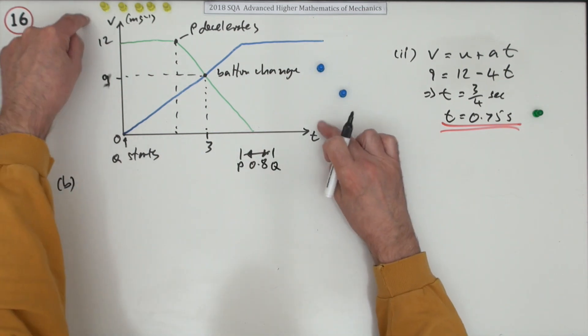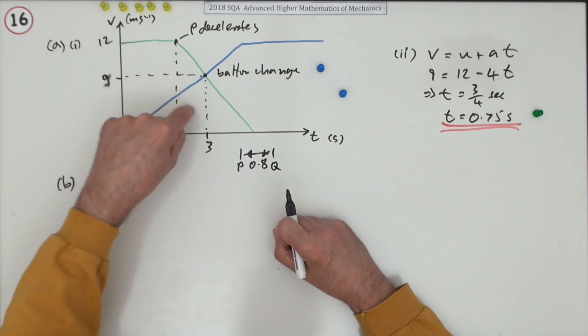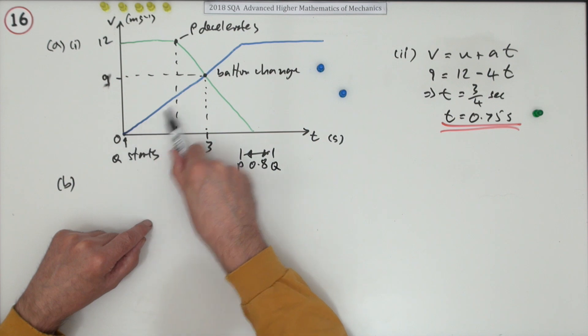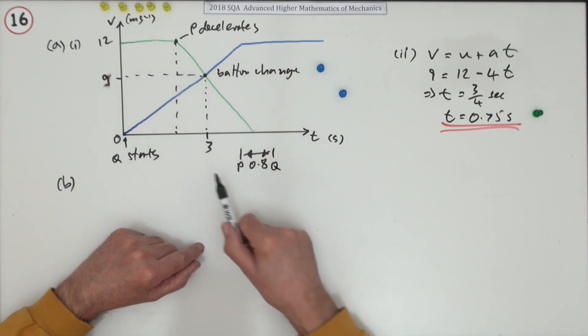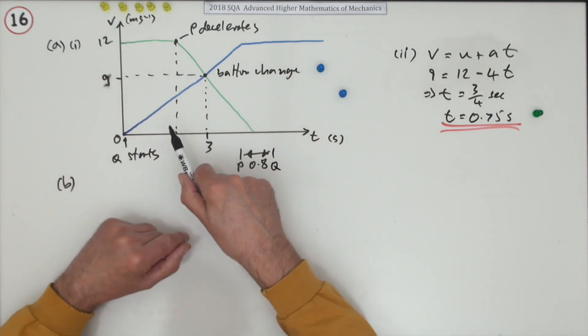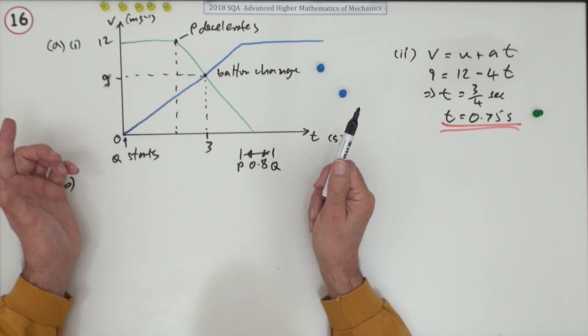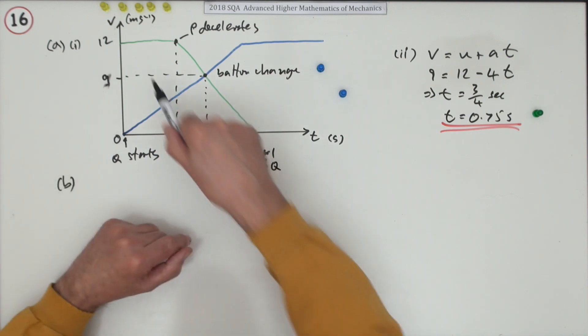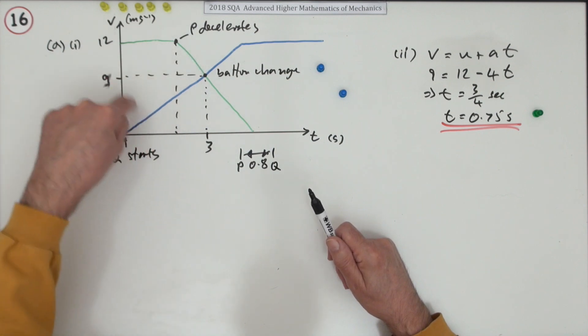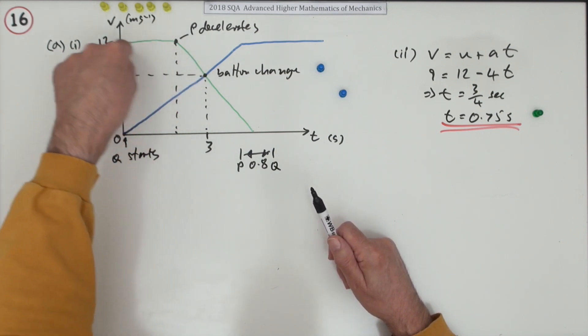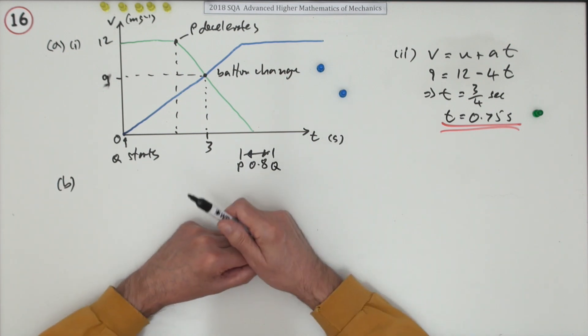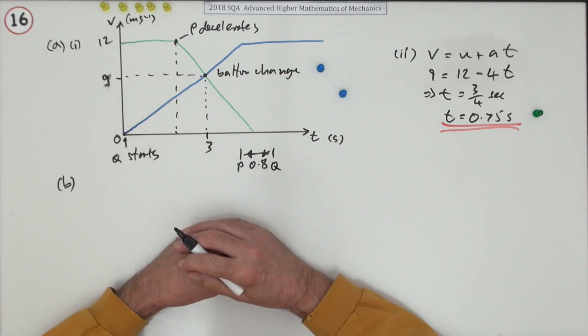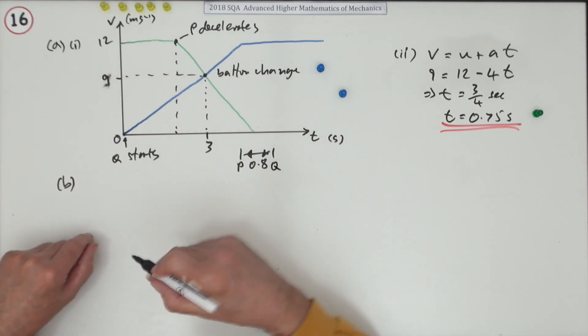Well the whole point about drawing a velocity time graph is that you can get the distances by the areas under the graphs. How far did Q travel to the baton change time? It's the area under the blue line, that triangle. How far did P travel? It's the area under this particular quadrilateral. And the distance between them, apart from this little extra offset here, will be the difference in those areas.